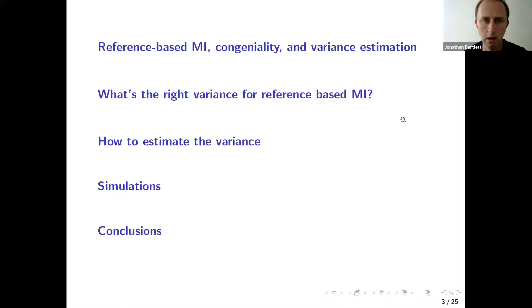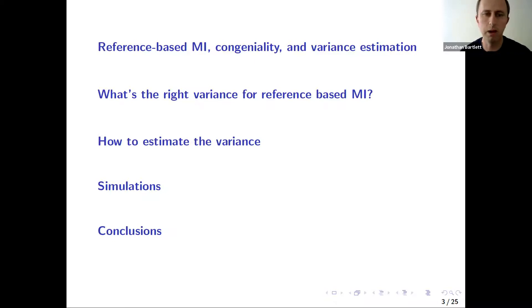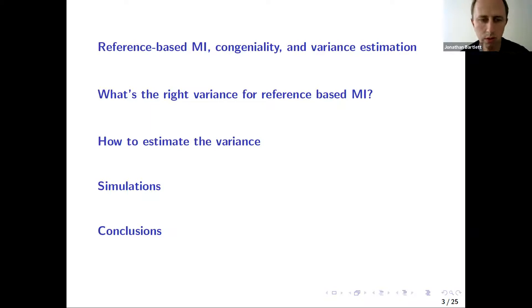These are the topic headings in my talk today. I'm going to introduce reference-based multiple imputation, talk about the issue of congeniality and variance estimation for these methods, then discuss the debate about what the right variance for reference-based multiple imputation is. I'll then talk about how to estimate the repeated sampling variance, give some simulation results, and then have some concluding thoughts at the end.